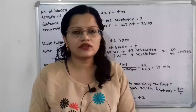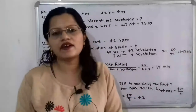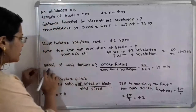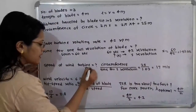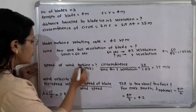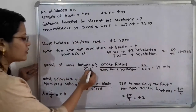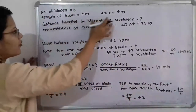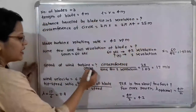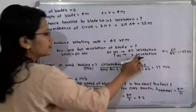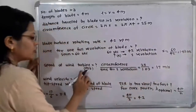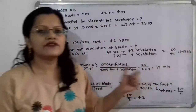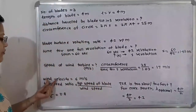Now we find the speed of the wind turbine. Speed equals distance divided by time. The distance traveled by the blade tip in one revolution is 25 meters, and the time for one revolution is 1.43 seconds. Therefore, speed equals 25 ÷ 1.43, which equals 17 meters per second. This is the speed of the wind turbine.